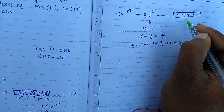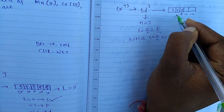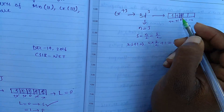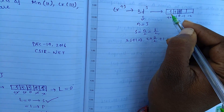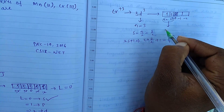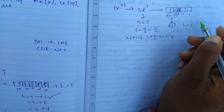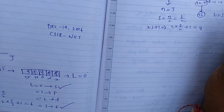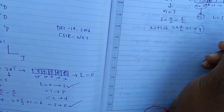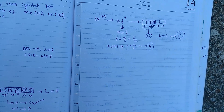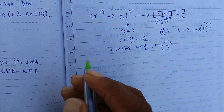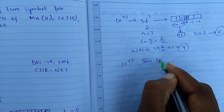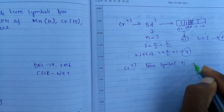To calculate L for Cr³⁺, the ml values are 0, −1, −2, +1, +2. The 0 is not necessary. We calculate +1 and +2, giving a total of 3. So L equals 3. We already know that L=3 means F. So the term symbol letter is F. Therefore chromium³⁺ term symbol is ⁴F.